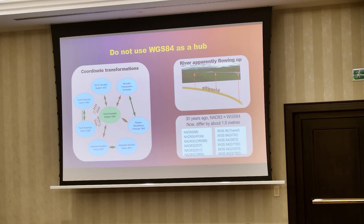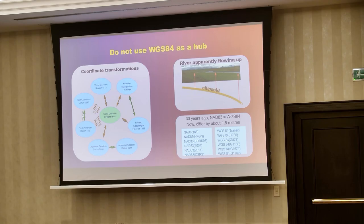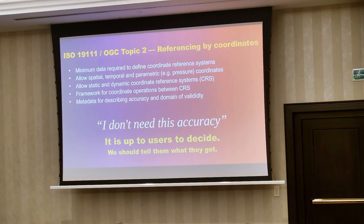Another complexity is that WGS84 is a position computed relative to the center of the Earth. When you live in a place like Australia, New Zealand, or Japan, those places move — it can be a few meters quite quickly. So a coordinate in WGS84 actually changes with time. The ISO standard takes care of this complexity.